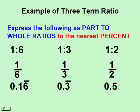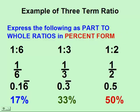Now let's convert them to percents. Notice it says to the nearest percent. So we'll write these to the nearest whole number. Multiply these decimals by 100. That will round to 17% for the first one. 33% for the second ratio. And 50% for the last ratio.